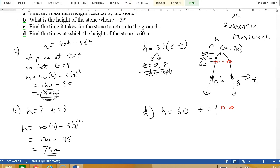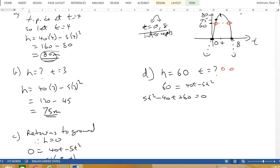I'm going to make height equals 60: 60 equals 40t minus 5t squared. I'll put the 5t squared over this side: 5t² minus 40t plus 60 equals 0.